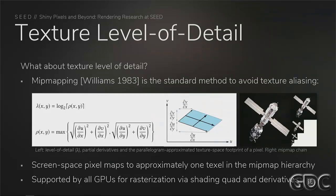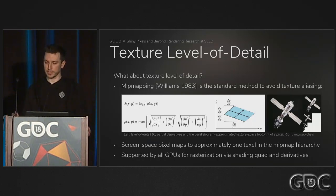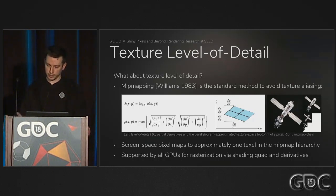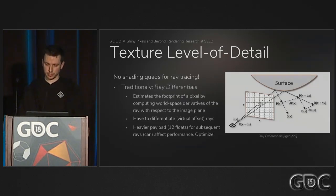One question in the room might be: all of this is cool, but how do you handle texture LOD since there's no concept of a shading quad with ray tracing? As most people here know, in the modern GPU, texture LOD relies on partial derivatives that you get from the shading quad — that's how you choose texture LOD, either automatically or manually. But with ray tracing, you don't have any shading quads.